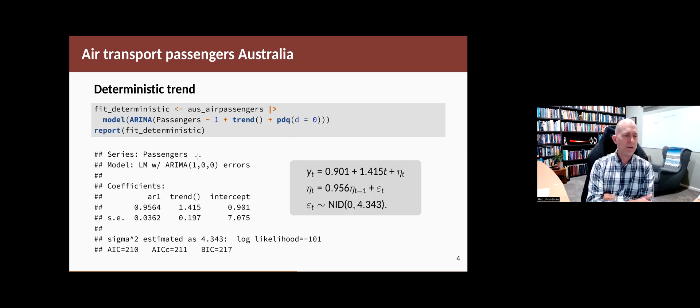If we write that out in the usual equation format, yt equals the intercept from here, the slope from here, plus an error term, and the error term is an AR(1). So the phi parameter is 0.956 from here. So that's the deterministic model.